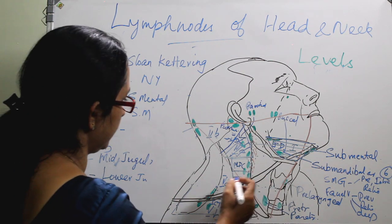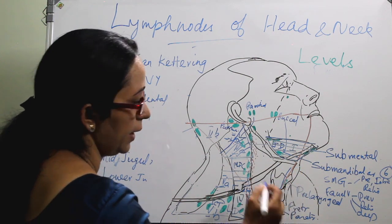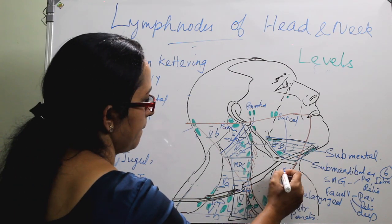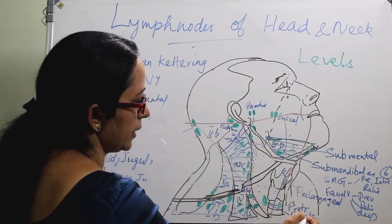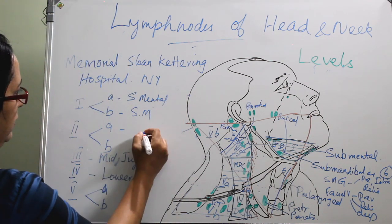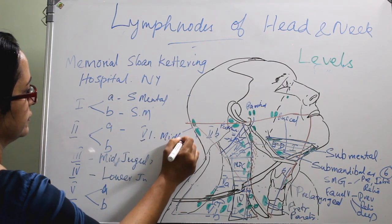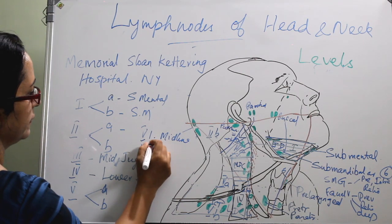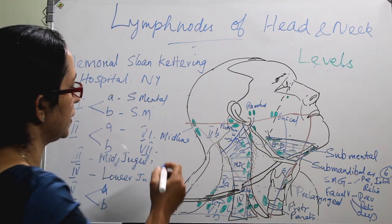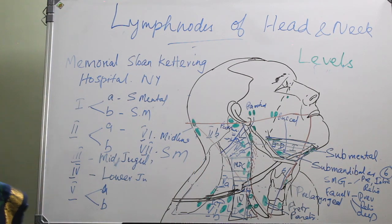Level 6 is the anterior midline group, which includes the pre-laryngeal, pre-tracheal, and para-tracheal nodes. Level 7 is the superior mediastinal group of lymph nodes and is not included in most American textbooks. So these are the seven levels of lymph nodes.